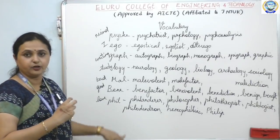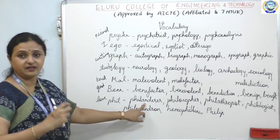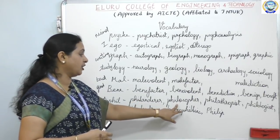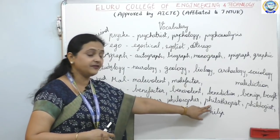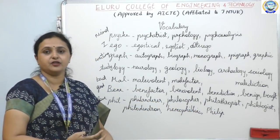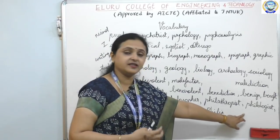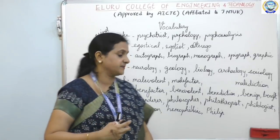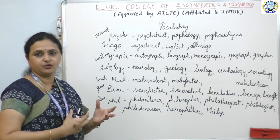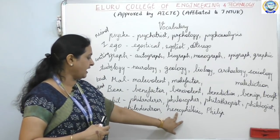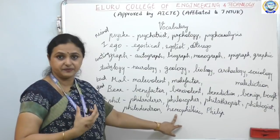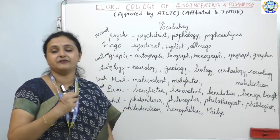Phil is of Greek origin and means love. So: philanderer is a womanizer — very important for CAT preparation. Philosopher is a lover of wisdom. Philanthropist — 'anthro' means human and 'phil' means love, so a philanthropist loves human beings and wants to do good for them. Philologist is a person who loves to learn about words. Philodendron — 'dendron' means leaves and flowers, so a person who likes to know about leaves and flowers. Hemophilic is somebody who loves blood. Philip is a lover of horses.